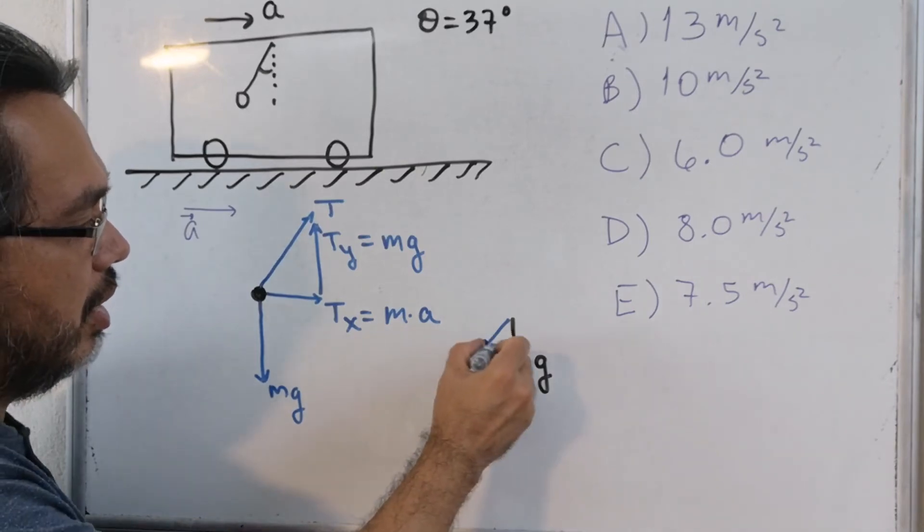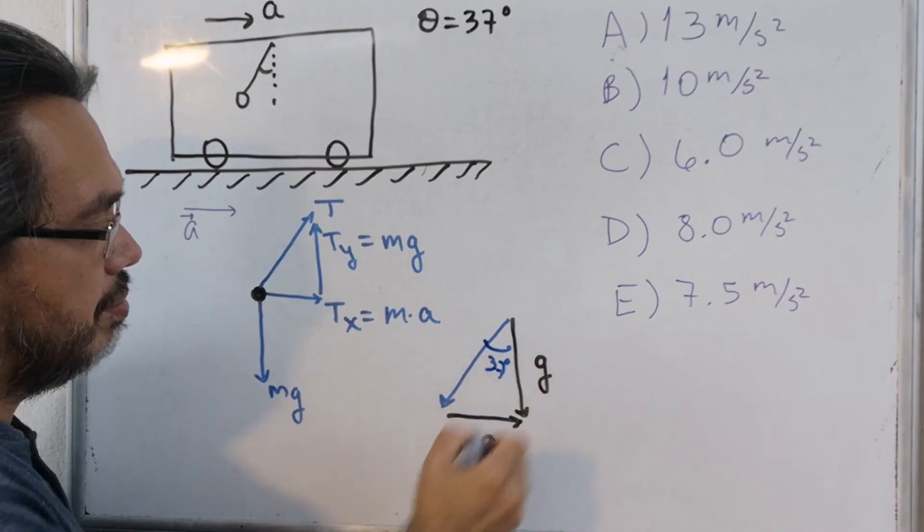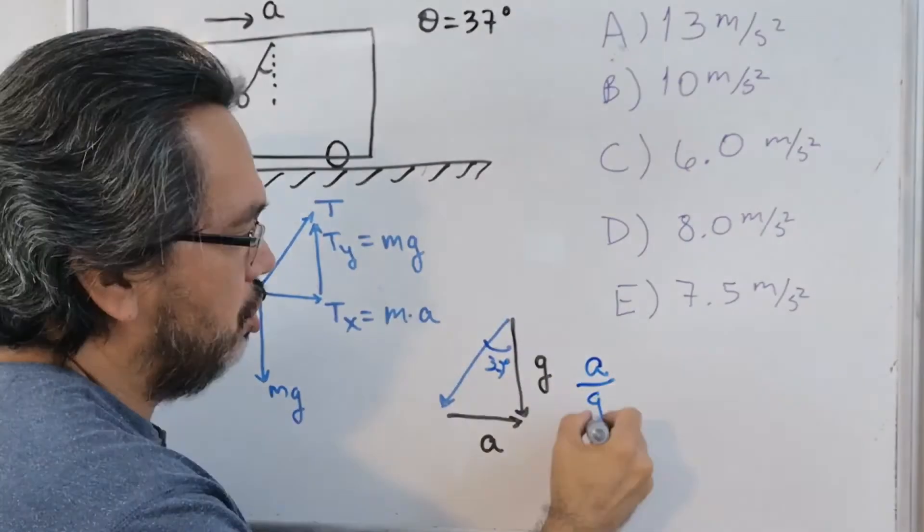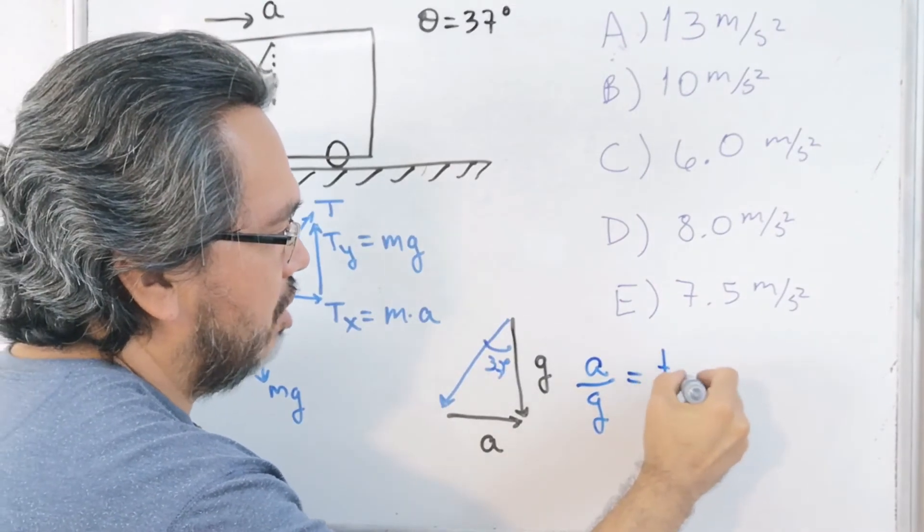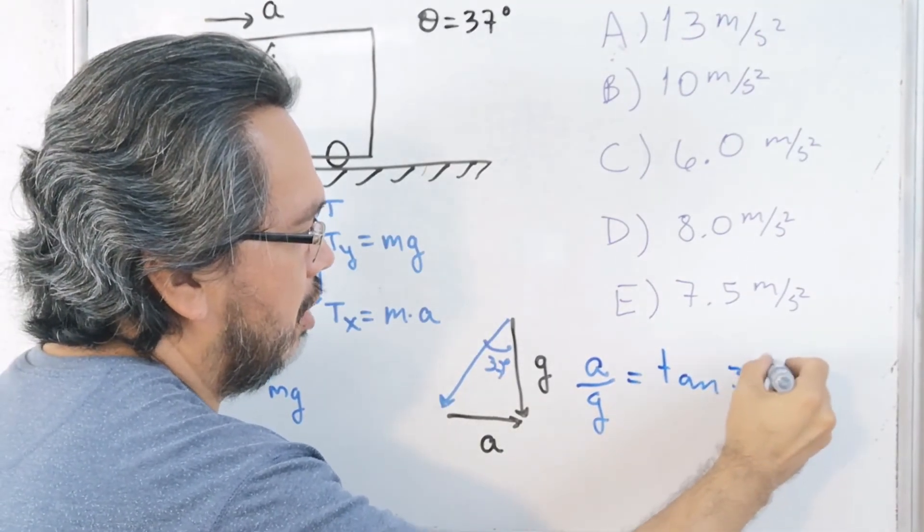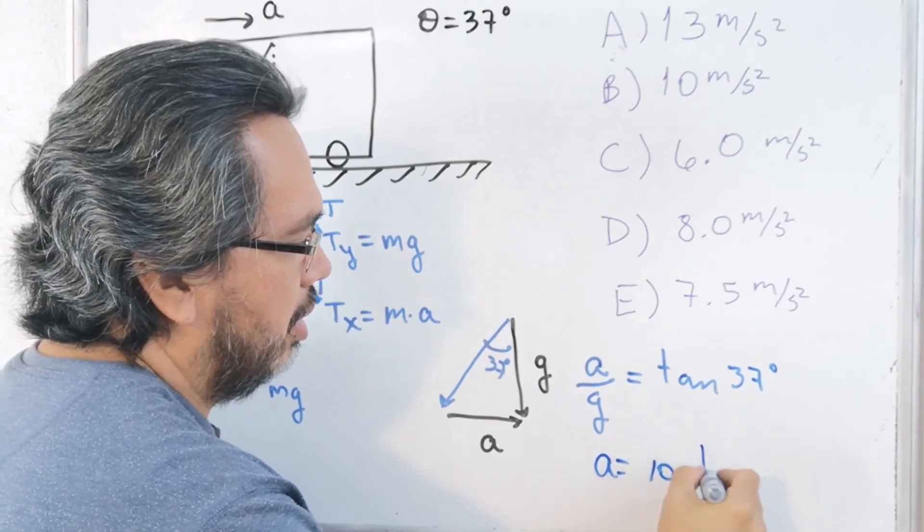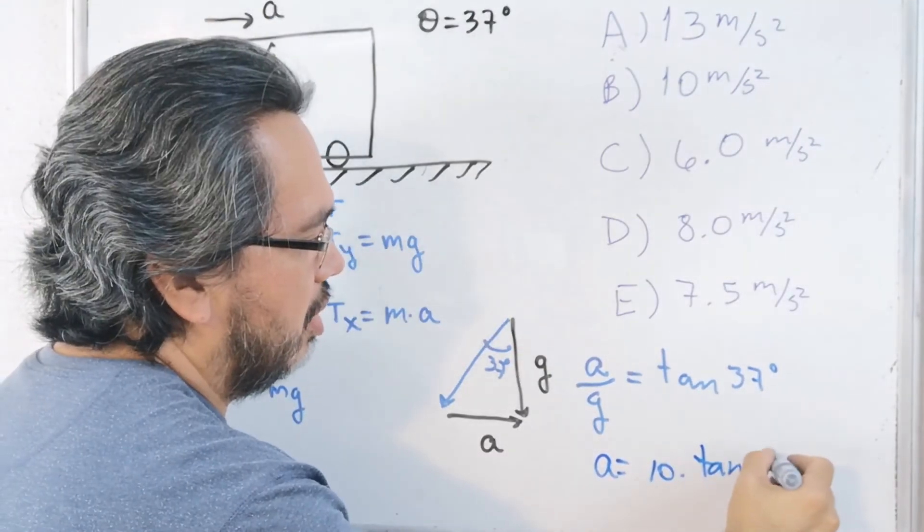Now, given that this angle is 37 degrees, A divided by G is equal to the tangent of 37, which means that A is equal to 10 tangent of 37 degrees.